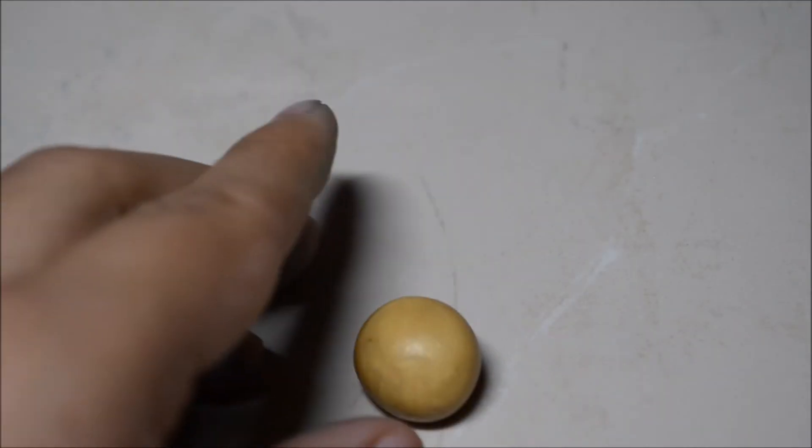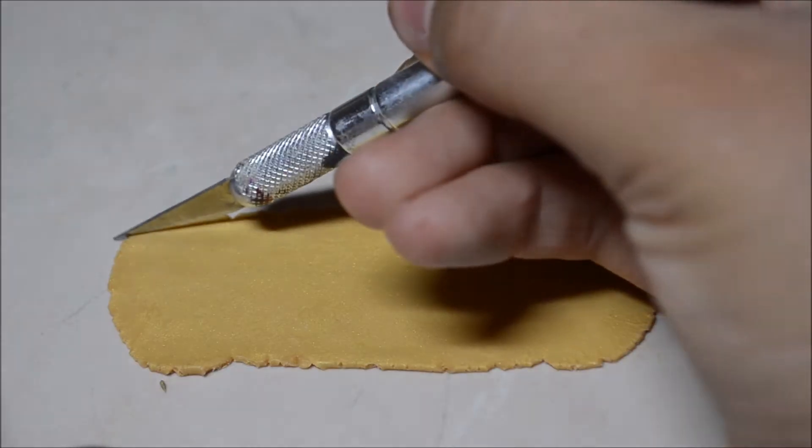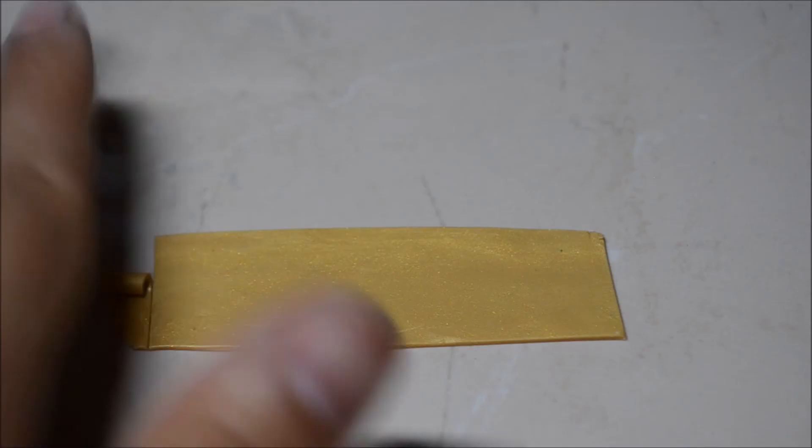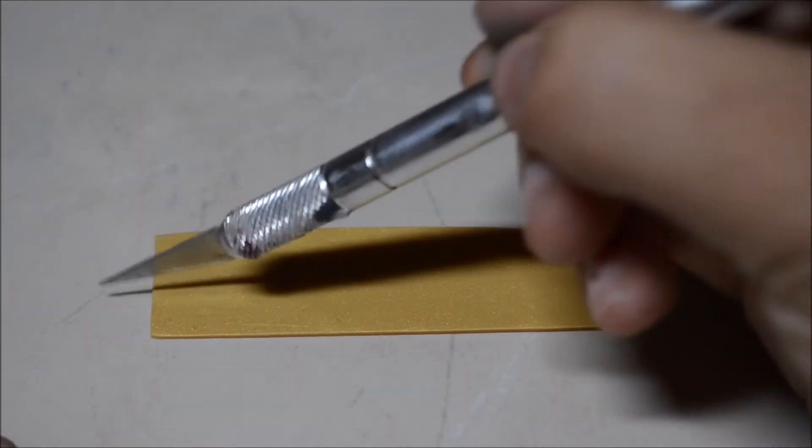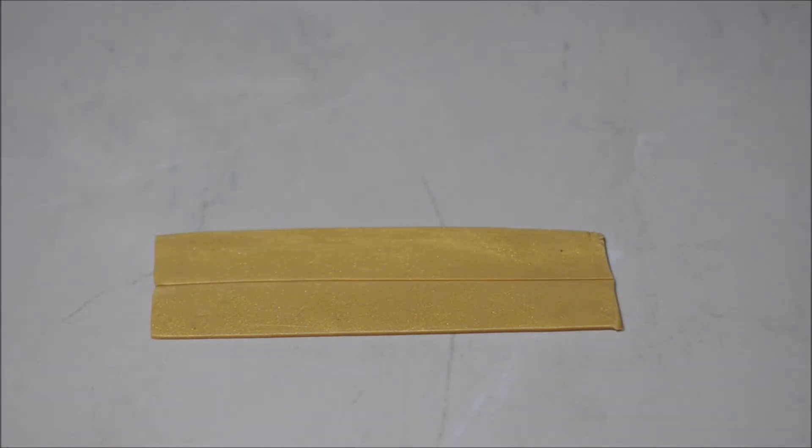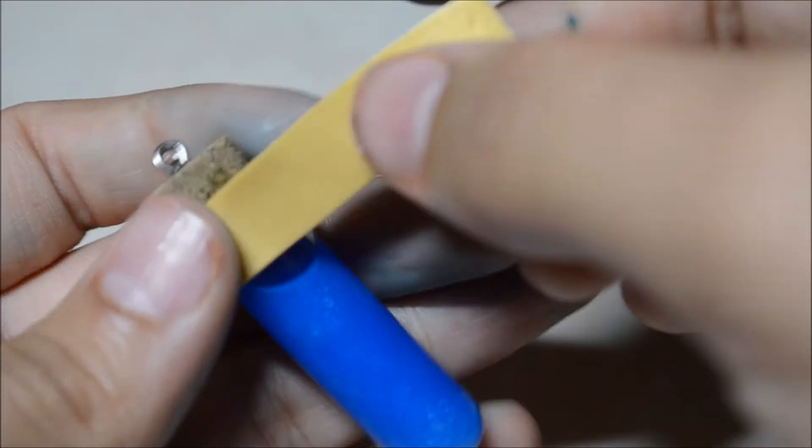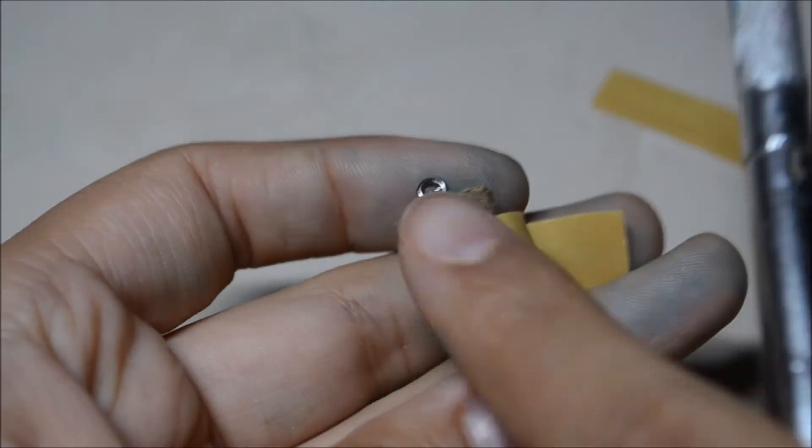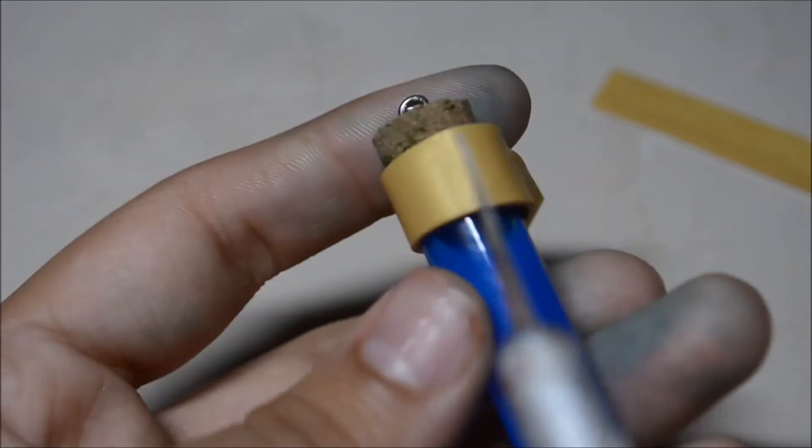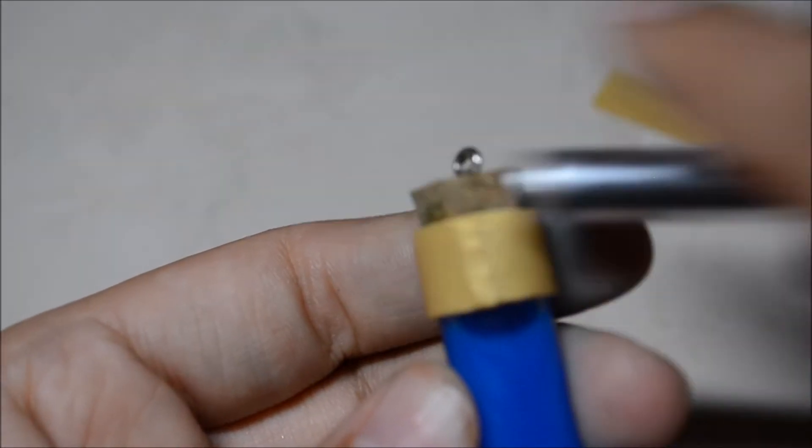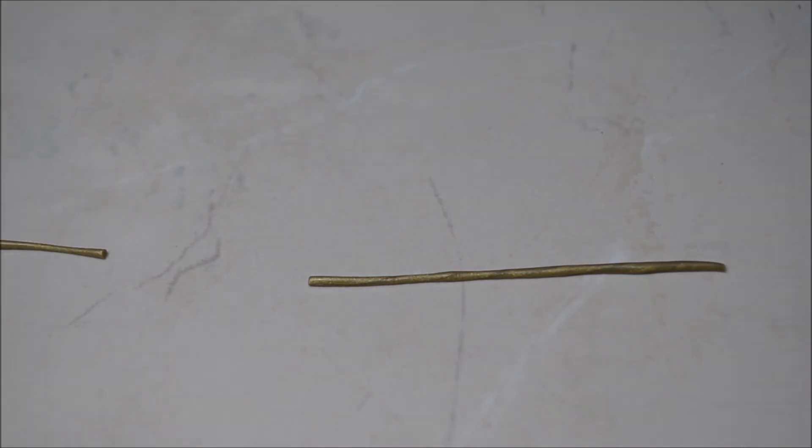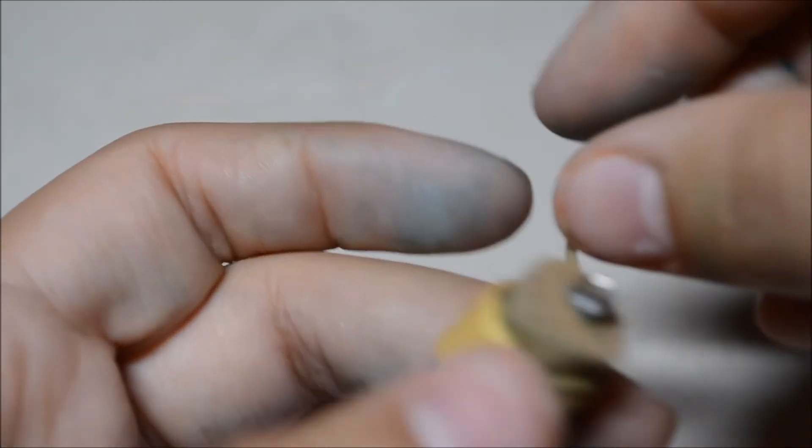So now you take the darker gold, roll it into a thin snake, and the lighter gold and roll it into a rectangle. Once you have a rectangle, just cut that rectangle into two and then put it right below the cork and cut it where they both meet, and blend in the seam.